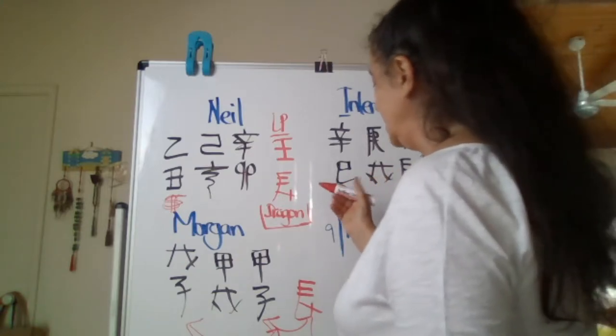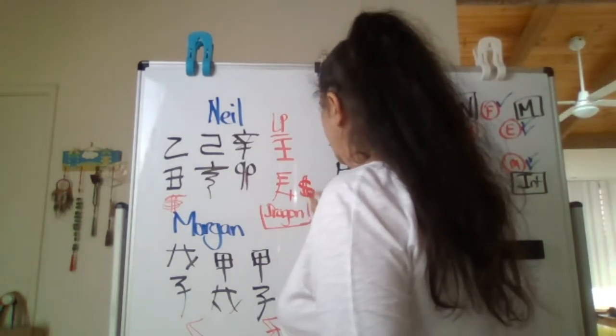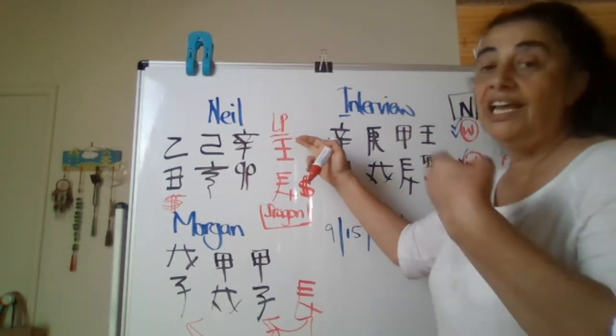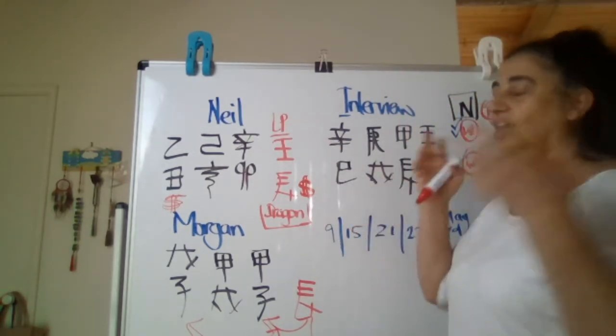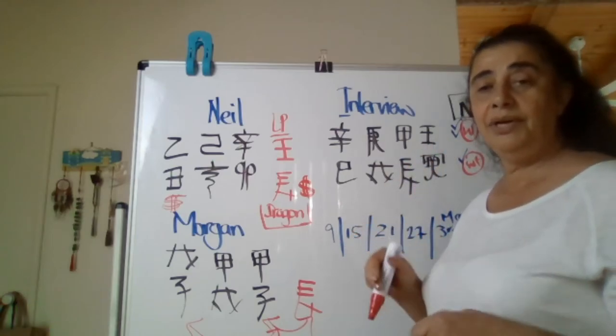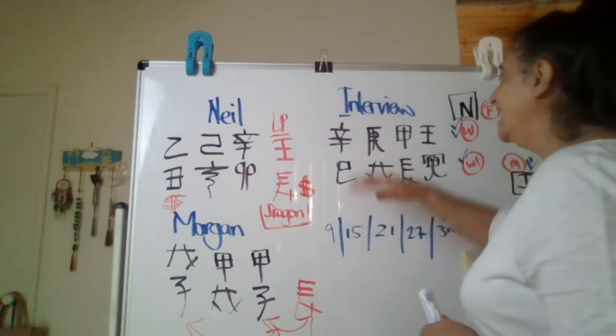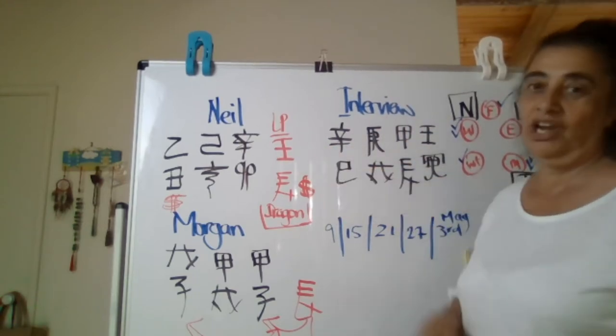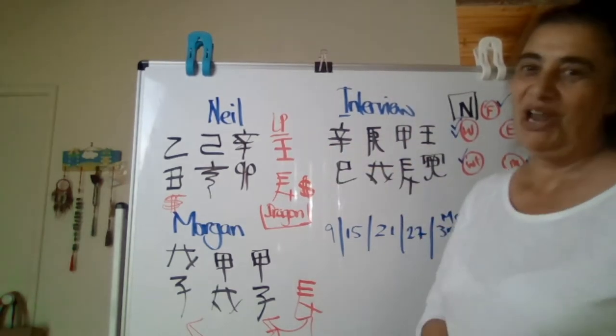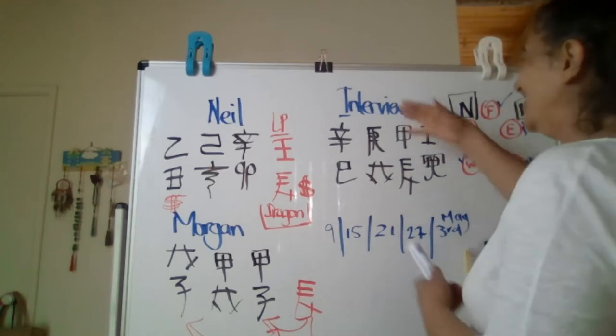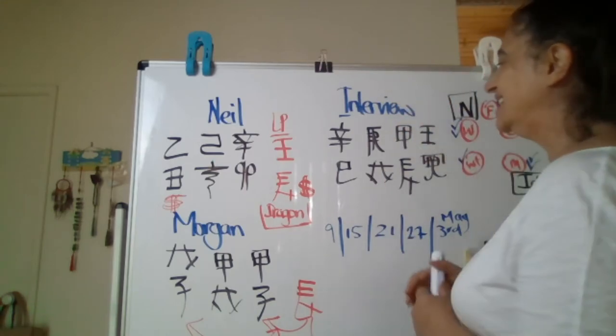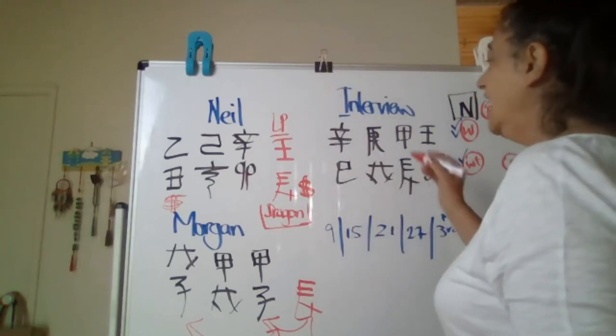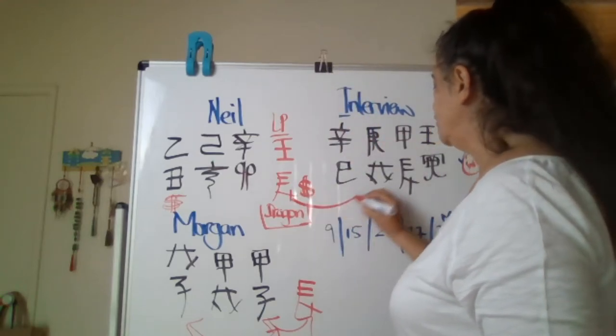So whatever he was thinking, whatever he is thinking, he's sitting on his money, so he's doing okay, he's doing well. Then this day came along, the hour came along, Morgan came along. So on this day, on this particular day for Neil Mitchell, he has this Dragon.